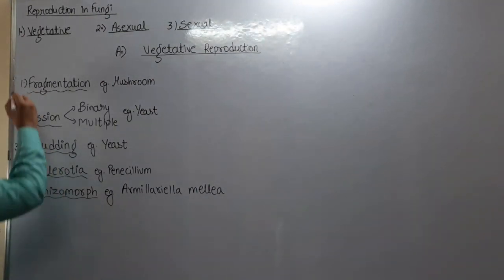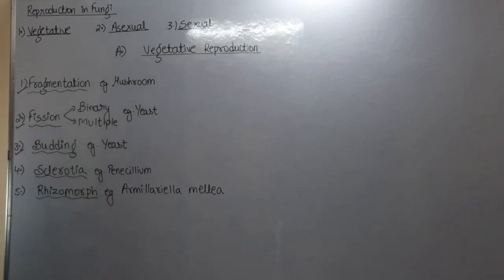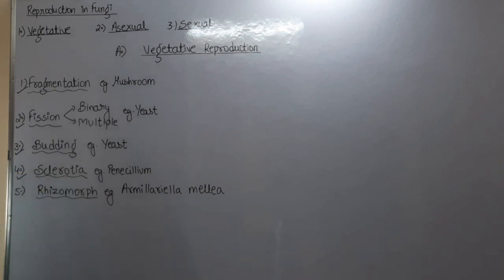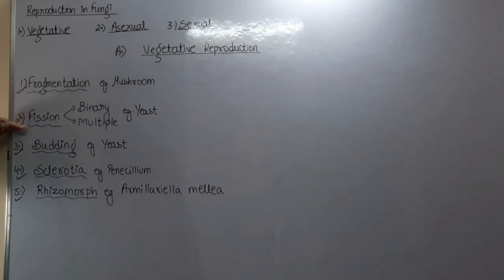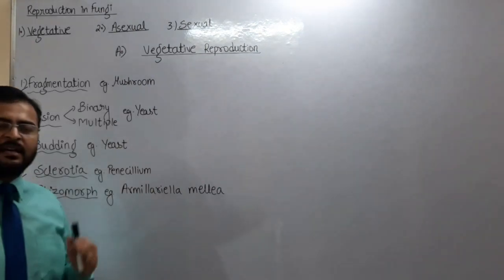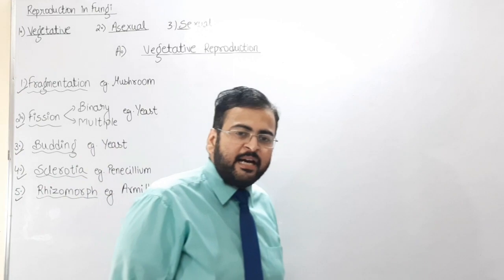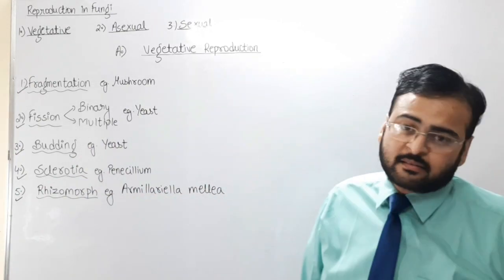Vegetative reproduction can occur by five methods: number one, by fragmentation; number two, by fission; number three, by budding; number four, by sclerotia; and number five, by rhizomorph. So fragmentation, fission, budding, sclerotia, and rhizomorph — with the help of these, vegetative reproduction can occur in fungus.